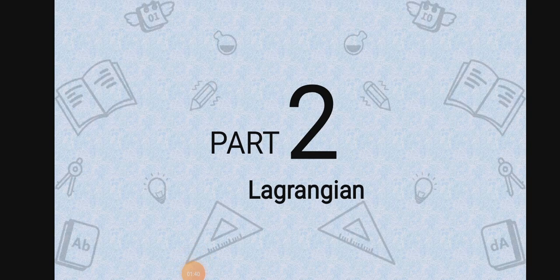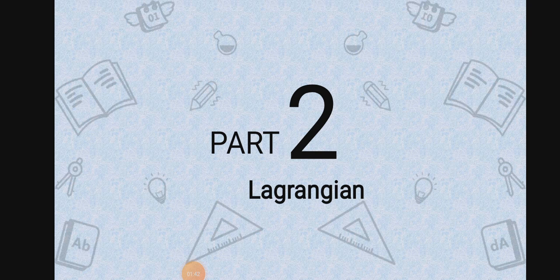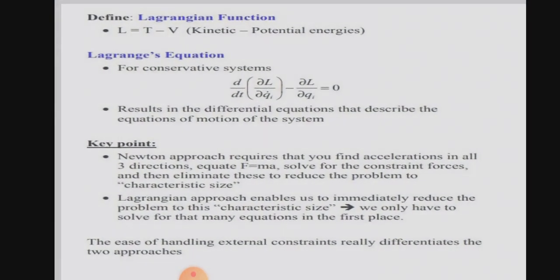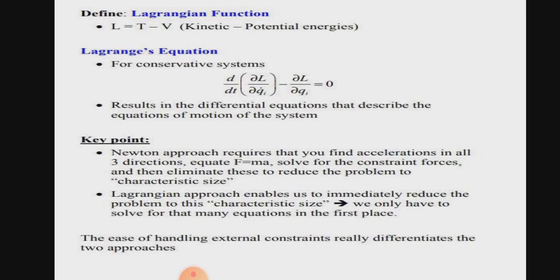Assalamu alaikum, I am Hamza Naveed. Lagrangian mechanics is a reformulation of classical mechanics introduced by the Italian-French mathematician and astronomer Joseph Louis Lagrange. Lagrangian function, also called Lagrangian, is a quantity that characterizes the state of a physical system. In mechanics, the Lagrangian function is just the kinetic energy, that is energy of motion, minus the potential energy, that is energy of position.